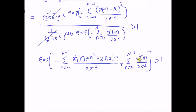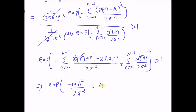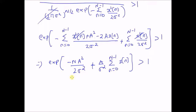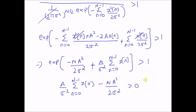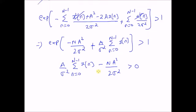The x²(n) terms cancel each other. We are left with the exponential of: −NA²/(2σ²) plus (A/σ²) times the sum from n=0 to N−1 of x(n), and this exponential should be greater than 1. By taking the logarithm on both sides, we have (A/σ²) times the sum from n=0 to N−1 of x(n) minus NA²/(2σ²) is greater than 0, since logarithm of 1 is 0.